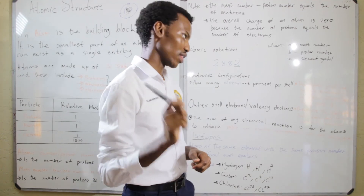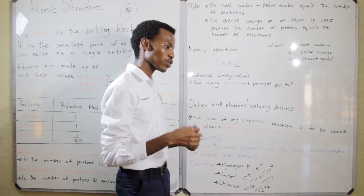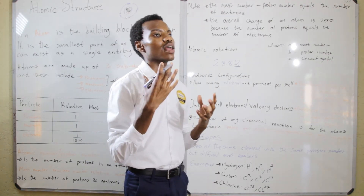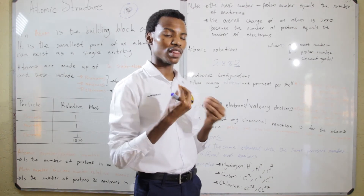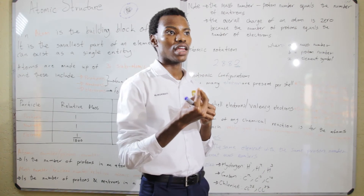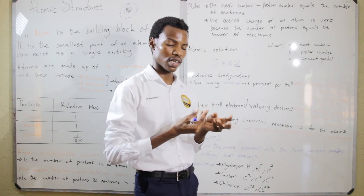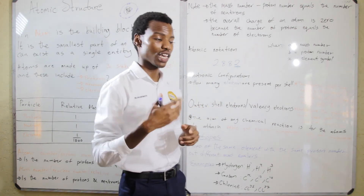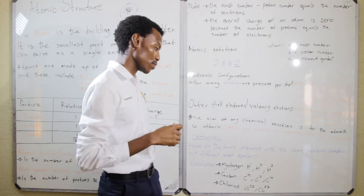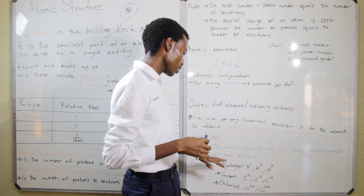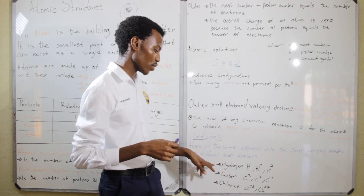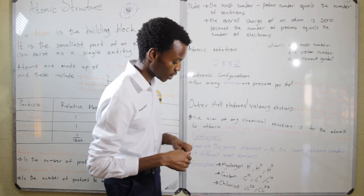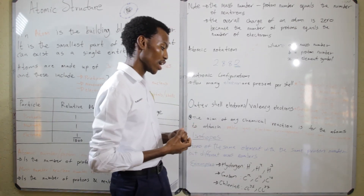So we decided to add one more thing, which is isotopes. Isotopes are basically atoms of the same element with the same proton number but different mass numbers. This means these atoms have the same number of protons in the nucleus, however they have different numbers of neutrons in the nucleus, so the overall mass number will be different. According to your syllabus you should be able to give examples in terms of hydrogen, carbon, and chlorine. For hydrogen we have hydrogen 1, 2, and 3; for carbon we have carbon 12, 13, and 14; and for chlorine we have chlorine 35 and chlorine 37.